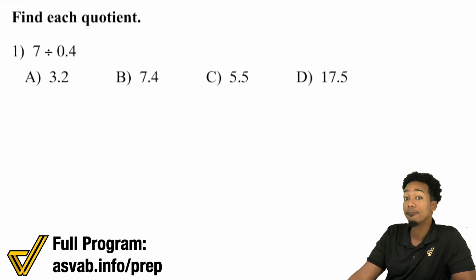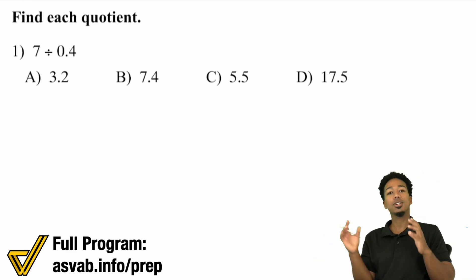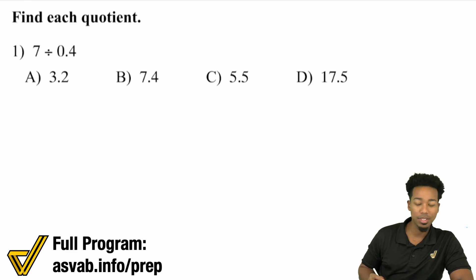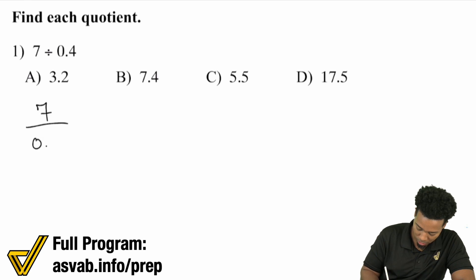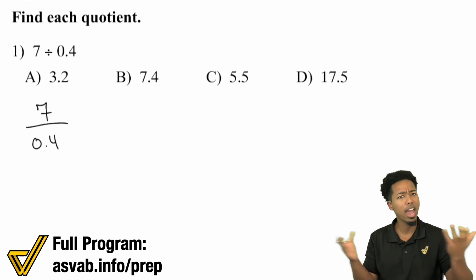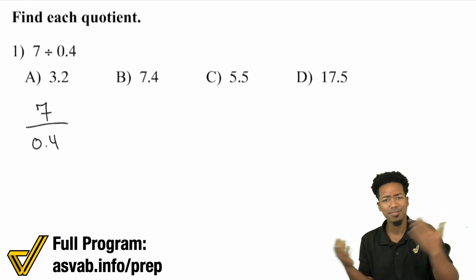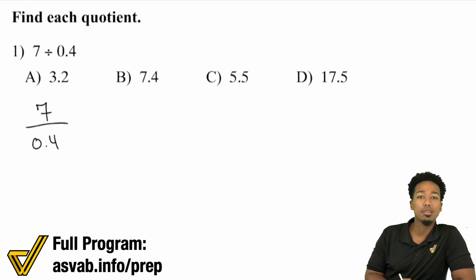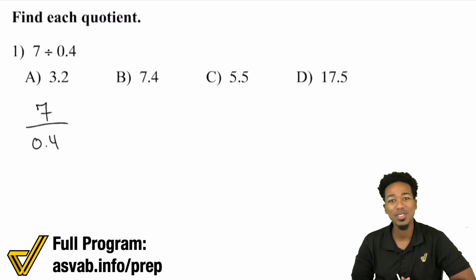Let's get started with this first problem here. We have 7 divided by 0.4. So here is the idea. When you look at 7 divided by 0.4, another way to really look at it is 7 divided by 0.4 as a fraction. The best way to divide by a decimal is to not divide by a decimal.